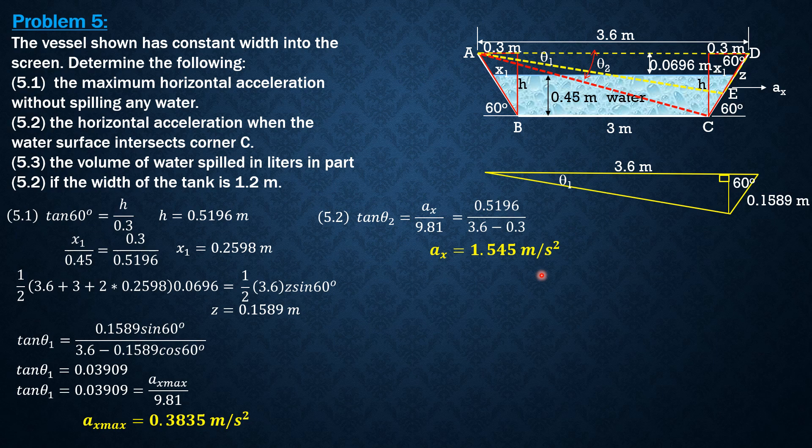And finally for the volume spilled in liters, if the width of the tank is 1.2. It should be the difference between the original volume of water in the tank and the final volume of water in the tank, or the volume that is retained in the tank.